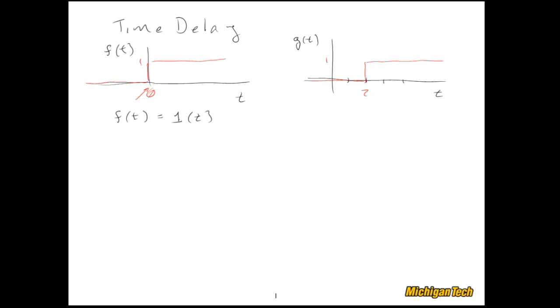Now delayed in time, g(t) is equal to that function 1(t-2). So we can see that the argument of this function becomes 0 at time equal to 2, and that's what causes the unit step function to take off and turn on and become a value of 1.